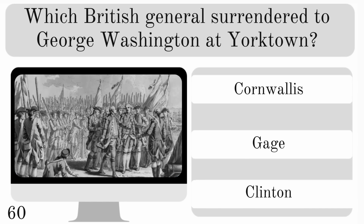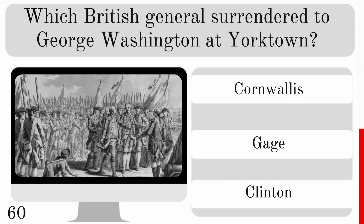Which British general surrendered to George Washington at Yorktown? Was it Cornwallis, Gage or Clinton? And it was Cornwallis.